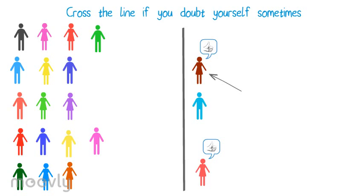The trainer chooses a person who will explain why he crossed the line. The participant says: I sometimes doubt myself if I do well at work. I also get tense about the fact that other people might do a better job than me.